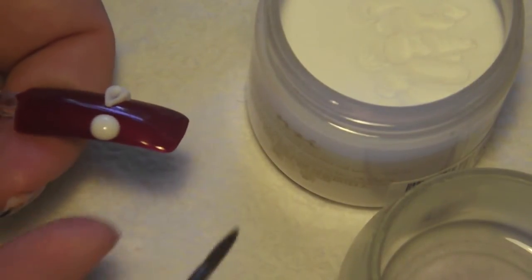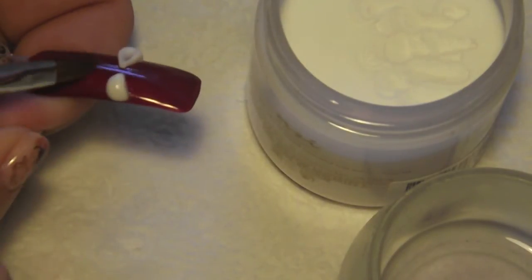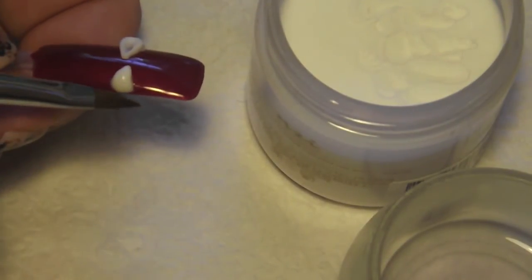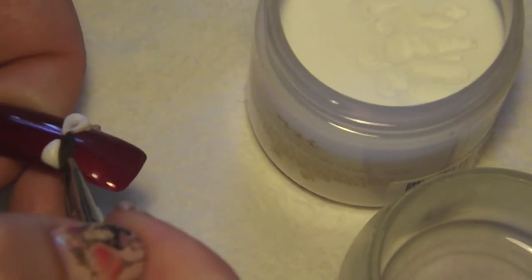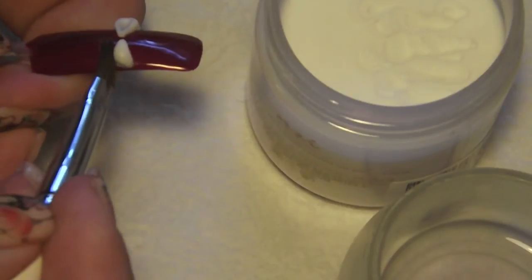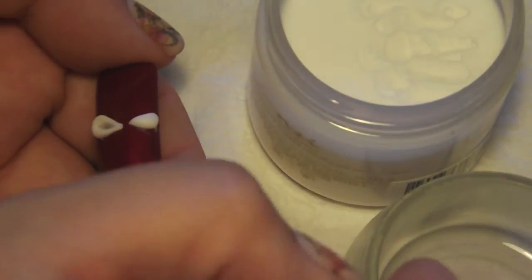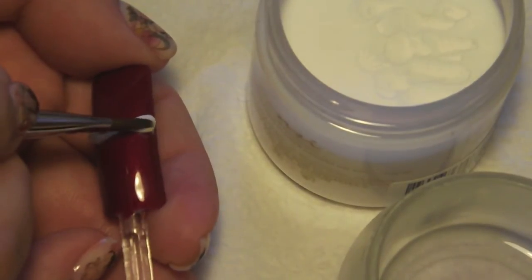And again, you're looking for that to be a little bit matte. And you're going to start making your soft triangle. And then you're going to use the body of your brush again, the very tip, to push into the center there.